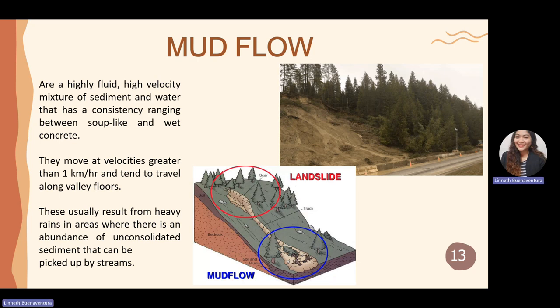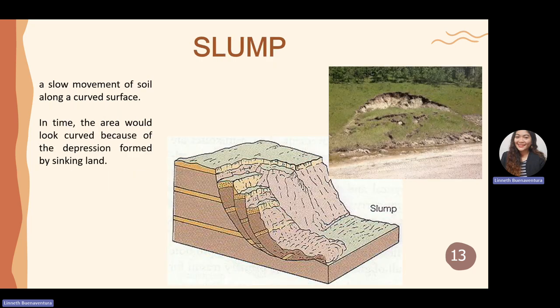Slumps are movements of soil along curved surfaces. They are a natural phenomenon wherein soil moves along a curved surface; over time the area will look curved because of the depression formed by the sinking land.